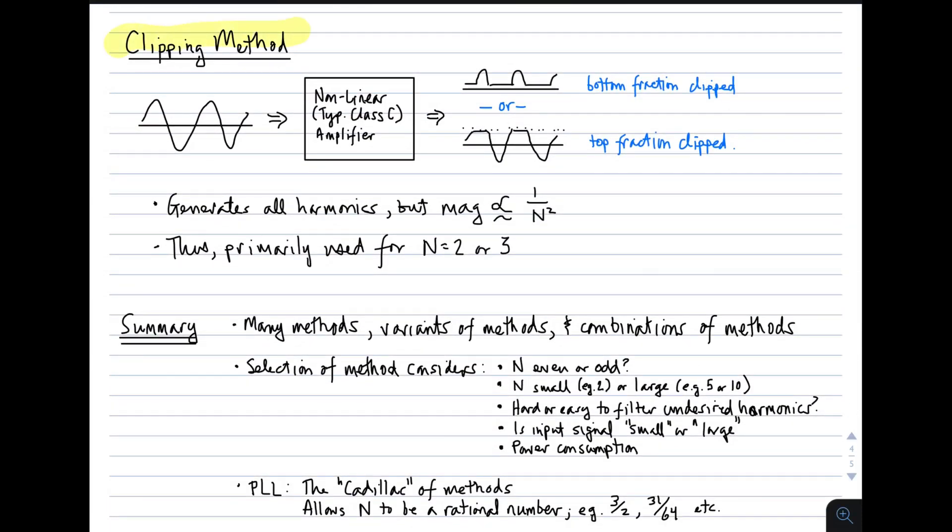In the clipping method, we apply a sinusoid to a nonlinear amplifier, typically a class C amplifier. And the output looks either something like this, where the bottom fraction of the waveform is clipped, or something like this, where the top fraction of the waveform is clipped. This generates all harmonics, like the sloppy pulse train, but the magnitude of those harmonics falls off relatively fast, similarly to the way that the harmonics roll off in the rectification approaches. So this is primarily used for frequency doublers or triplers. It's harder to use this for higher frequency harmonics, because higher order harmonics get weak much faster.